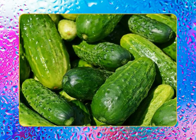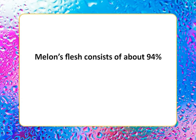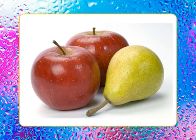Melons belong to the same family as cucumbers and are commonly eaten raw. Their flesh consists of about 94% water and only 5% sugars. The seeds, stripped of their hard coats, may be eaten and also yield an edible oil. Pomes are fruits of apple and pear trees, where the receptacle surrounds the ovaries in the flower, enlarges to become edible and juicy, and encloses the cells containing the seeds.